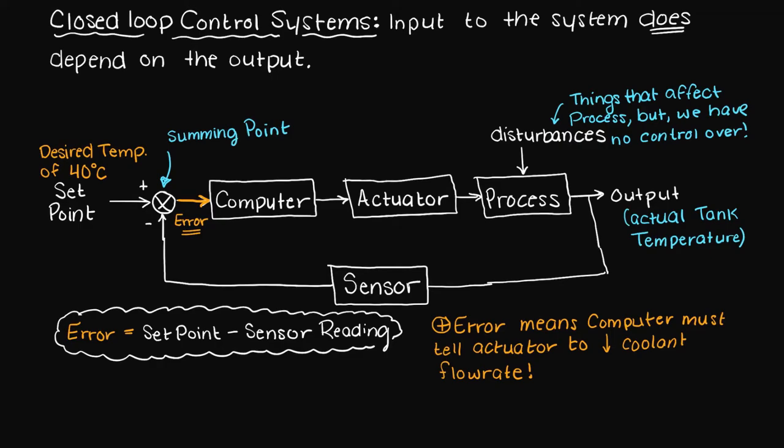Hopefully now the description I gave earlier of what a closed loop control system should make a bit more sense. We can now see how the output of the process leads to the input being affected. Remember the error term changing will affect the actuator to increase or decrease coolant flow rate.